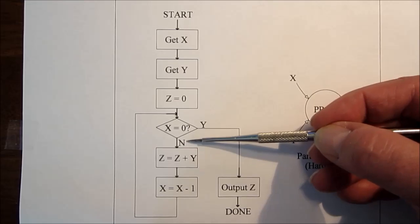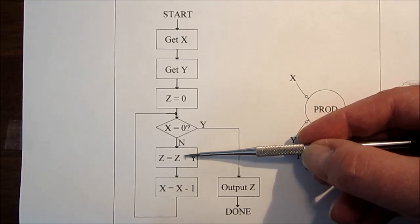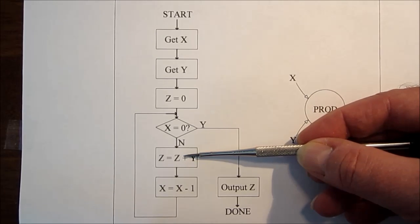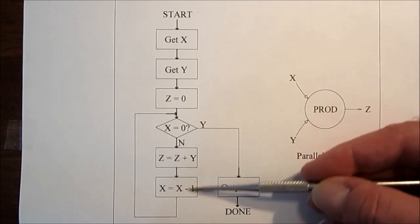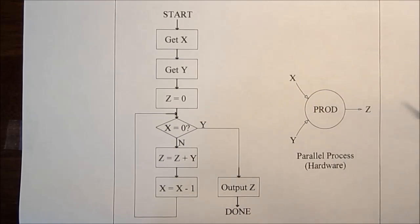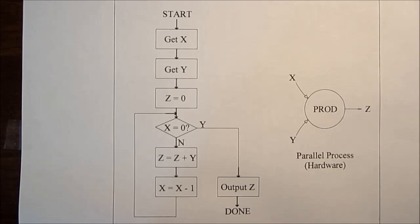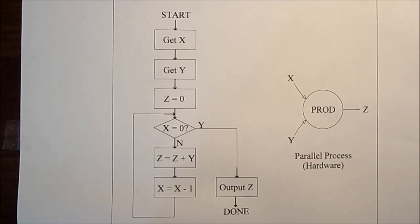But if x is not zero, then we just add the other digit to itself and count down x. So essentially what we're doing is we're multiplying one digit by the other.